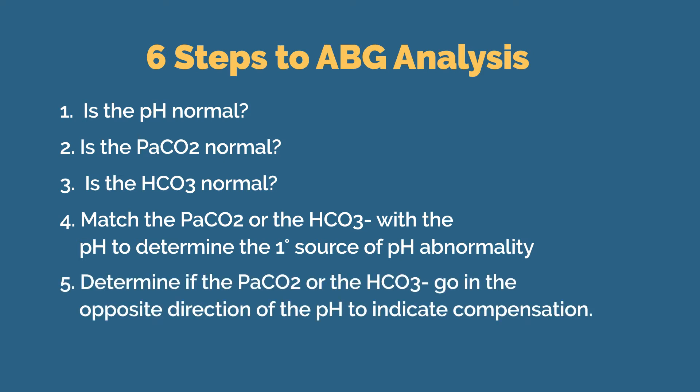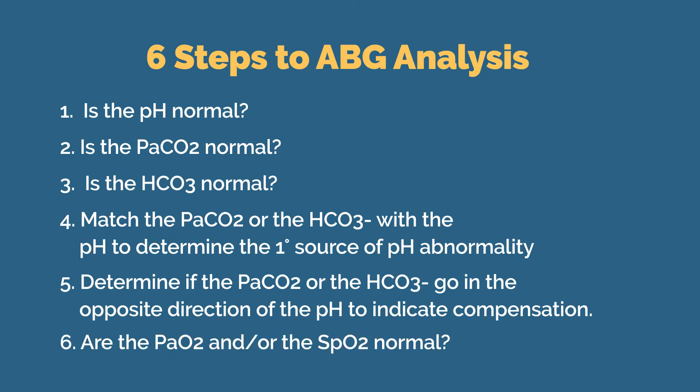In step five, we need to determine if the carbon dioxide or the bicarbonate go in the opposite direction of the pH to indicate compensation. And finally, step six, we need to look at oxygen levels and see if they are normal or low, indicating possible hypoxemia.